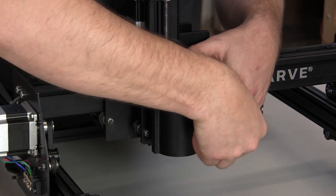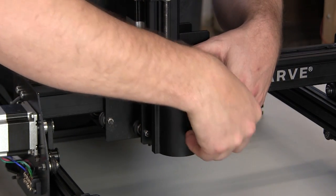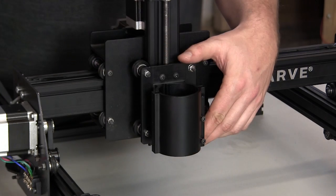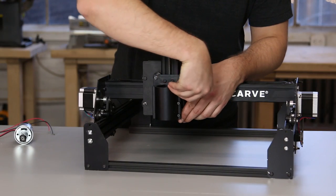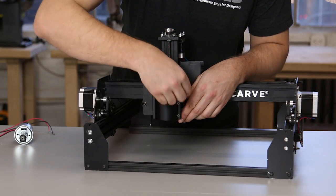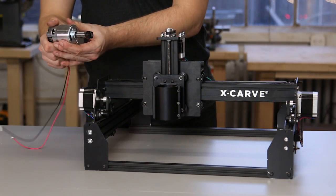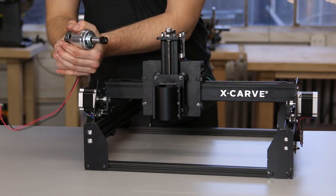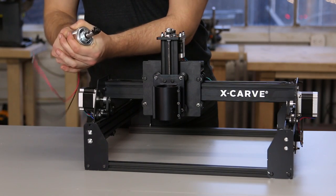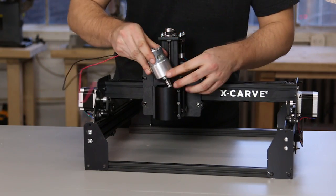Put the three M4 screws into the holes for the clamp of the spindle mount. Start the screws finger-tight. Slide the 24-volt spindle into the mount. Be sure that the metal spacer is flush with the bottom of the mount, along with the bottom of the spindle motor housing.